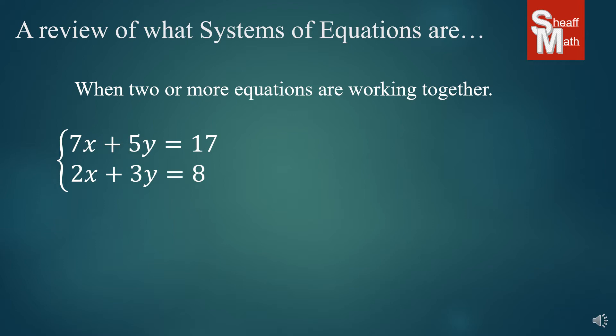Graphically, what they look like, we have two lines that intersect at a certain point. And that point where they intersect right there, that is what we're looking for. That is the solution. It's an ordered pair, an x-y. And that is our goal for all systems of equations, is to find the point where they intersect.